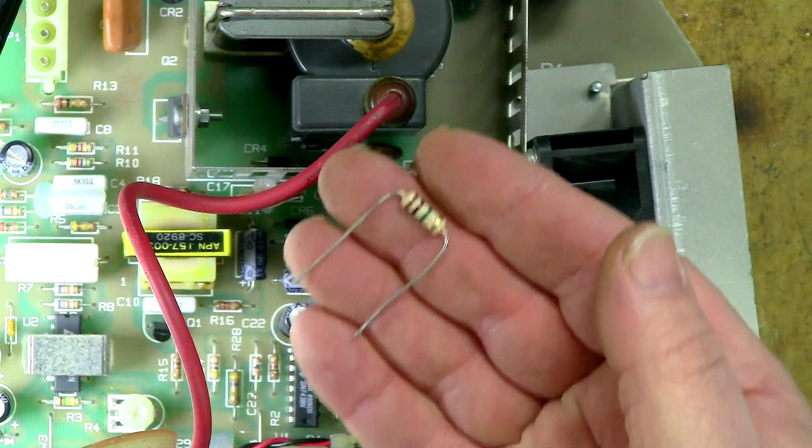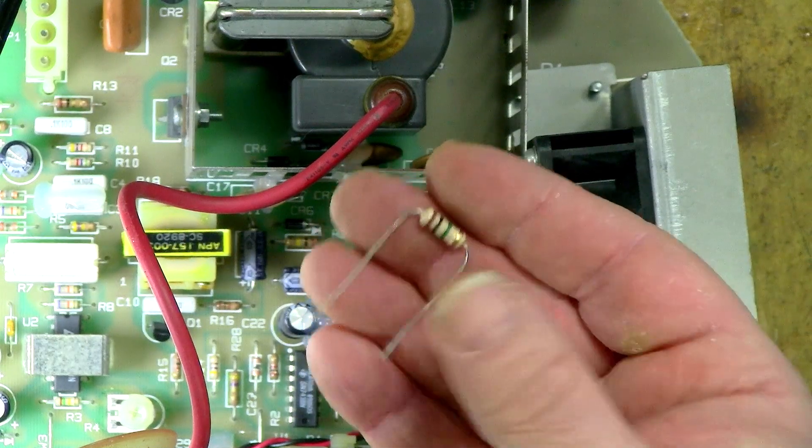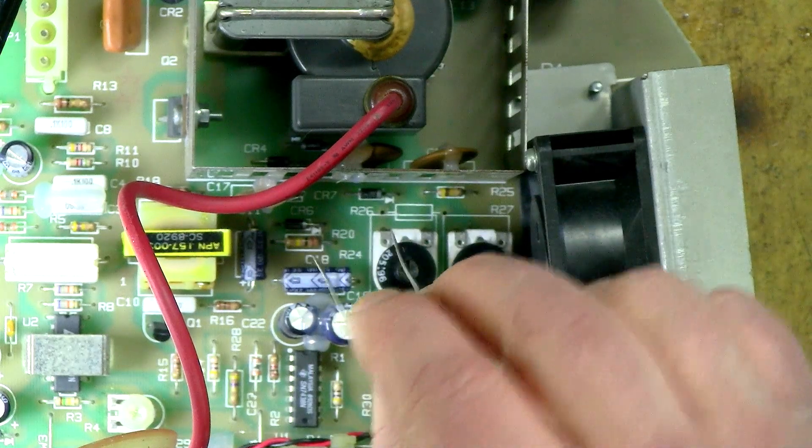So I have a replacement here. This is a one-watt resistor, so this should be able to handle anything that's thrown at it, and we're just going to pop that in in place of the old one.